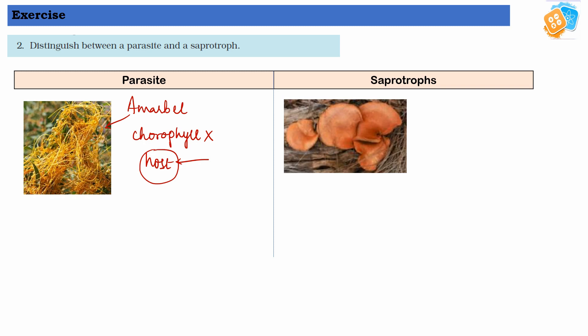Now saprotrophs. This is an example of saprotrophs — this is an example of fungus. They depend upon dead and decaying material, like organic matter. So all the dead and decaying material is decomposed by saprotrophs, and they depend upon this.